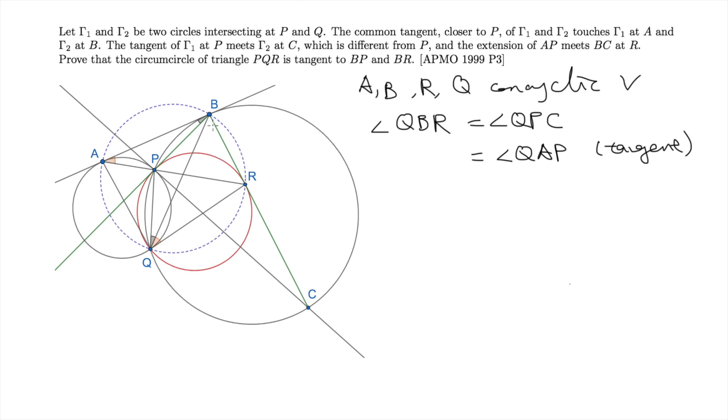In order to prove that BP is tangent to the circle P, Q, R, it is sufficient to show that the angle BPR matches the angle PQR. So again, we are going to decompose the angle into two parts, the red and the green part. Indeed, the angle PQR is the sum of the angle PQB and BQR.